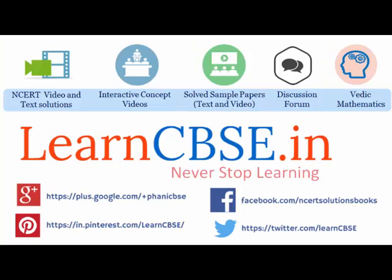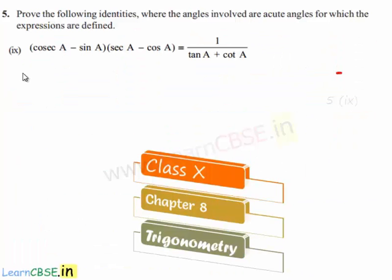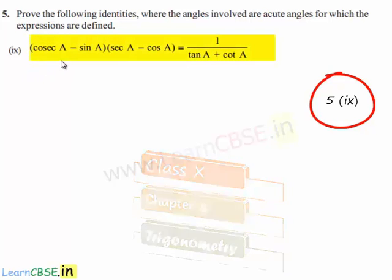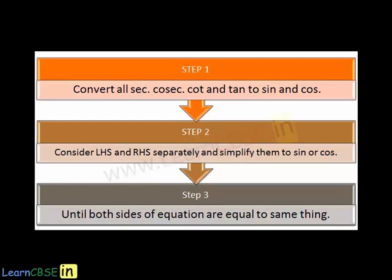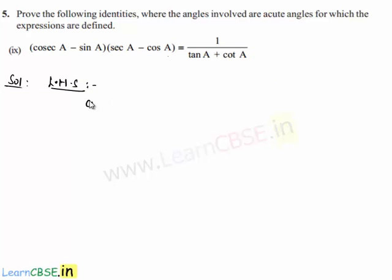Moving on to the 9th bit of the 5th problem, we are asked to prove that cosecant a minus sin a into secant a minus cos a is equal to 1 by tan a plus cot a. In order to prove this, let us initially consider the left hand side: cosecant a minus sin a into secant a minus cos a.